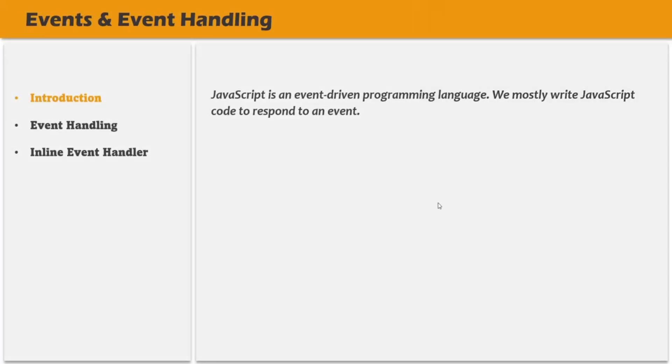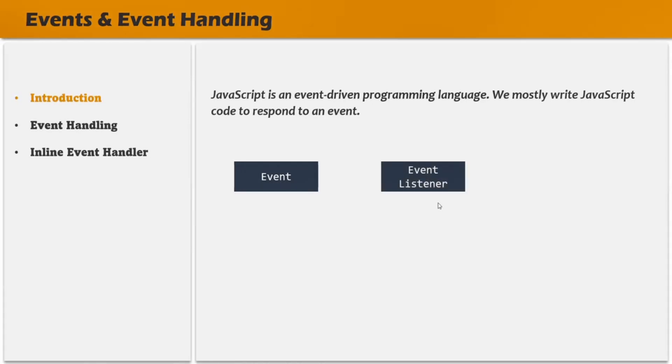As mentioned, JavaScript is an event-driven programming language — we mostly write JavaScript code to respond to an event. For that, there are three main things to know. First, you need to know about events: an event is something which happens on a DOM element or on the browser. For example, when a button is clicked, the click event has happened on the button element. Then we have the event listener, which is responsible for listening to a specific event on a given element. And we have the event handler — the JavaScript logic or function which gets executed whenever a specific event happens.